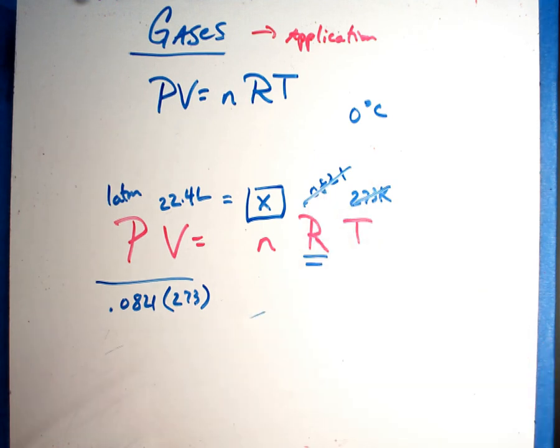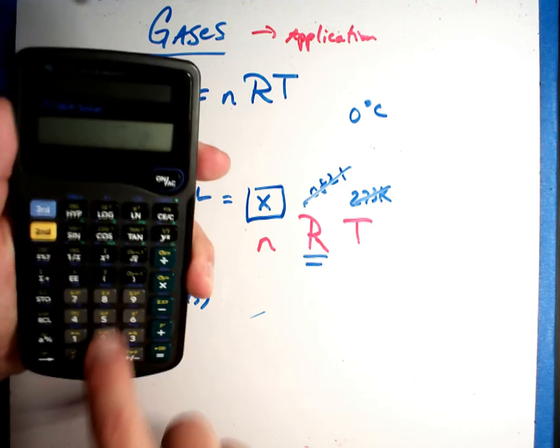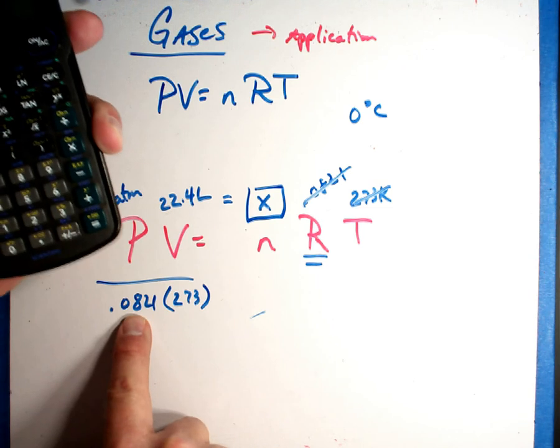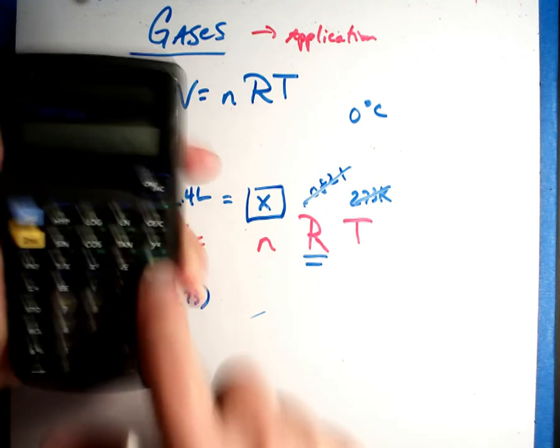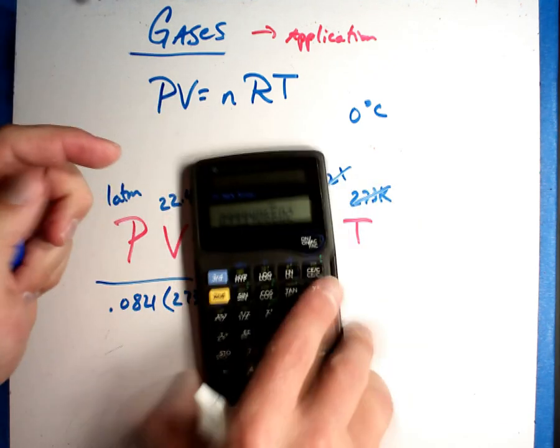So, I divide by these two. I'm going to grab my handy-dandy calculator. Take 1 atmosphere times 22.4 divided by 0.0821, and divided by 273. Now, why don't you look carefully at what that answer is.